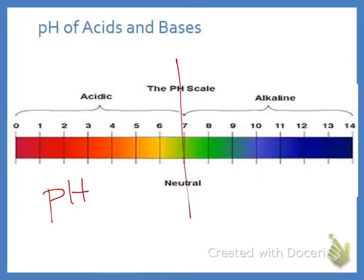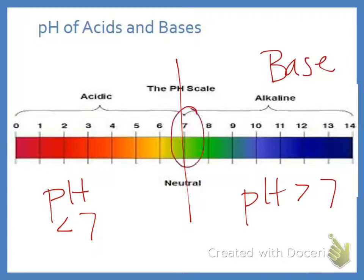Less than 7 is an acid. If a pH is greater than 7, it's a base. That says alkaline, but we'll say a base. And if you're exactly 7, you're neutral.